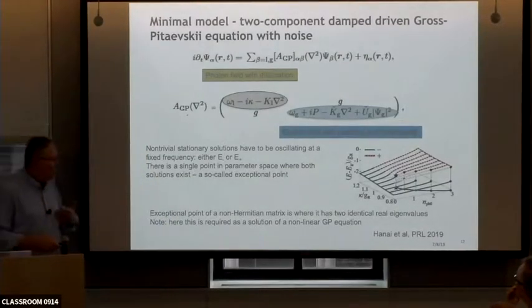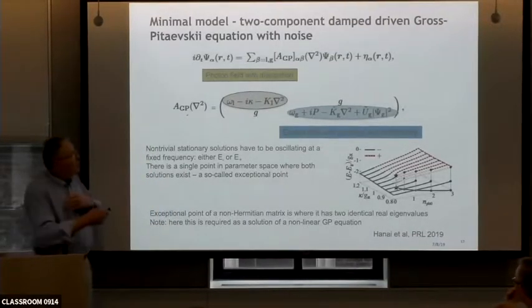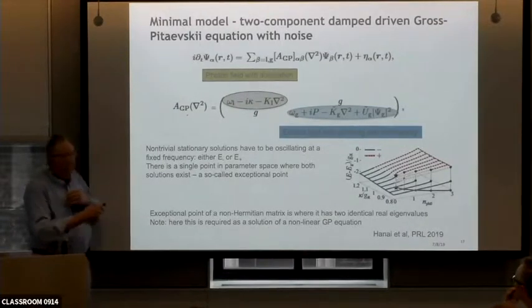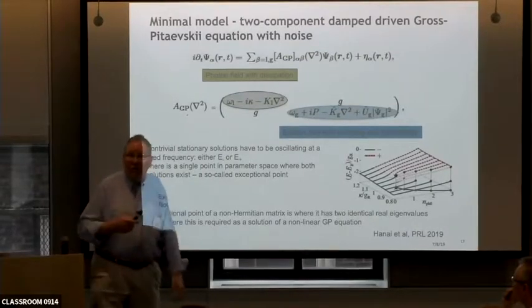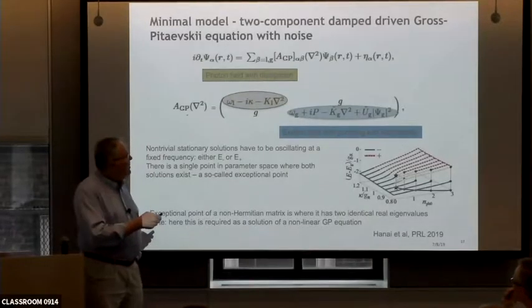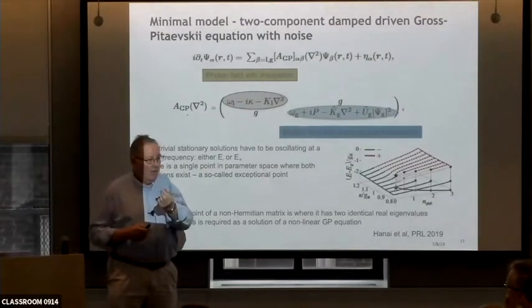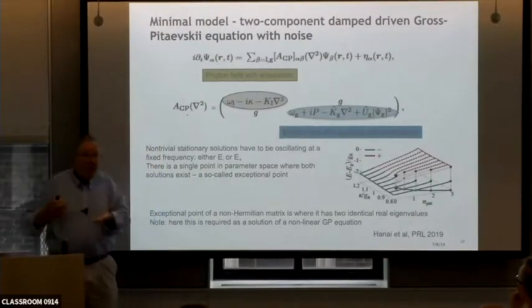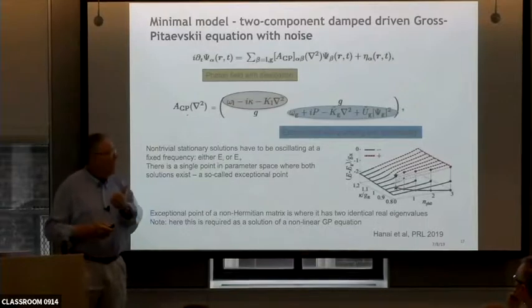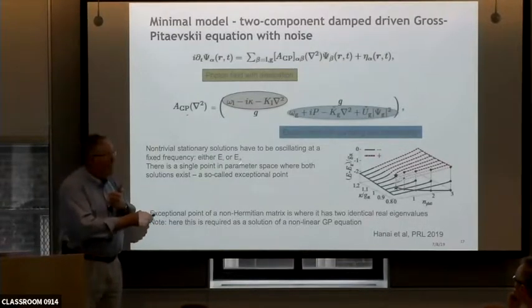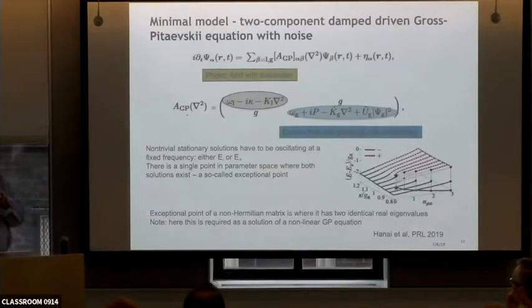So the conditions which allow you to produce identical eigenvalues of a two-by-two non-Hermitian matrix are not general. You have to tune parameters to do that. But one of the things you should notice is that at the point where that happens, the eigenvectors are not independent. So, it's at that point, actually, formally, you cannot diagonalize the matrix because both eigenvectors that corresponding to the E-minus mode or the E-plus mode end up being completely identical. So, I think that will matter.